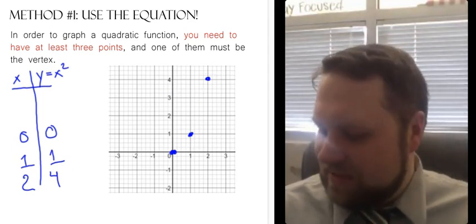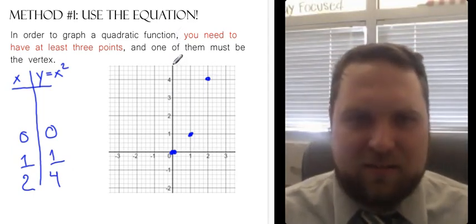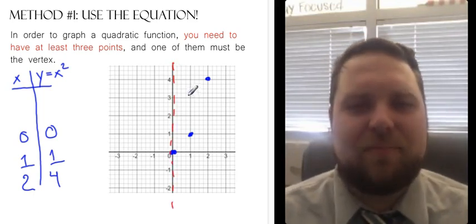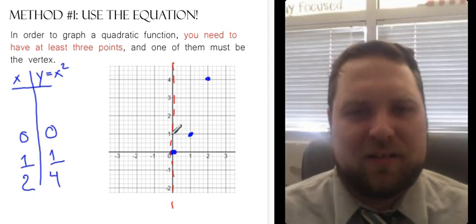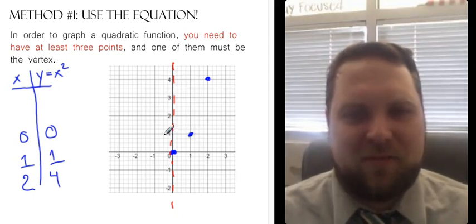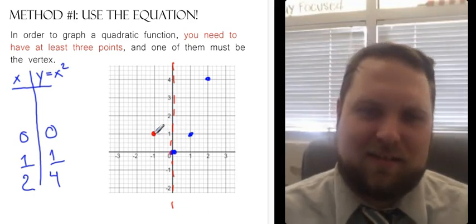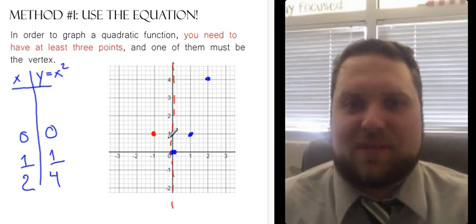I know my axis of symmetry runs straight up and down through the vertex, just like that. Well, look at this point. This point is just one space away from the axis of symmetry. So if I look one space away over there, there's got to be a point there. That's what the axis of symmetry means.